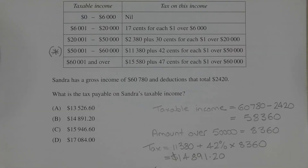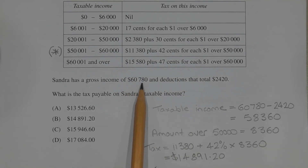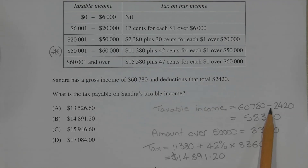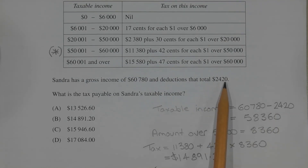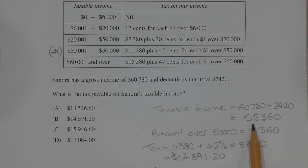The first thing to work out is Sandra's taxable income, and we work that out by taking the gross income of $60,780 and subtracting from that the deductions of $2,420. So $60,780 minus $2,420 is equal to $58,360.